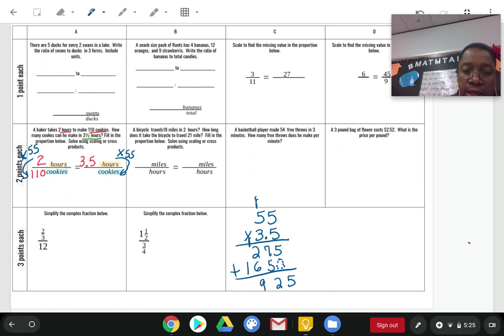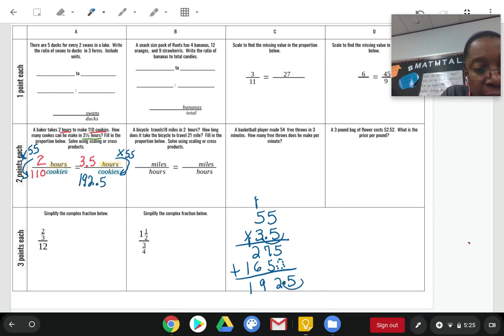And then, I'm going to write my 1. Now, I need to count how many numbers are to the right of a decimal. Okay. And then, I'm going to do the same thing here. I'm going to move that decimal one space. So, I now have the answer that in 3.5 hours, the baker can bake 192.5. That's what that 0.5 means. Cookies. That would be my answer.